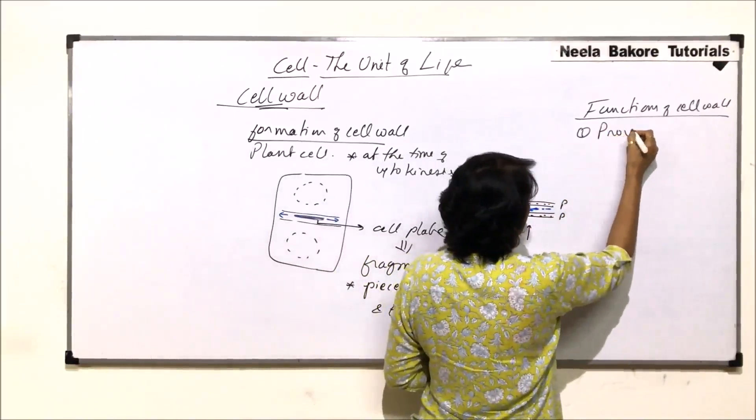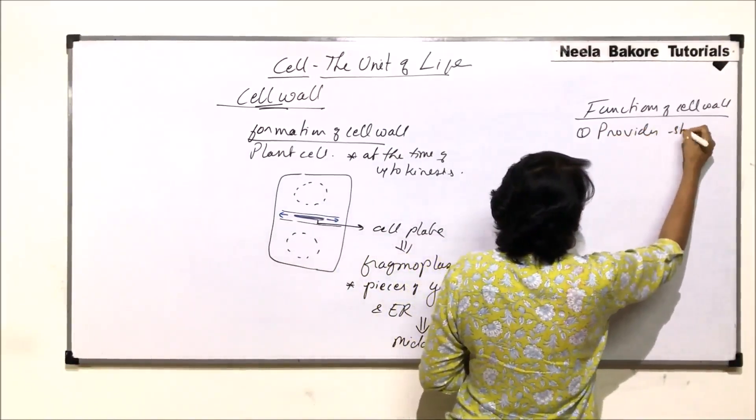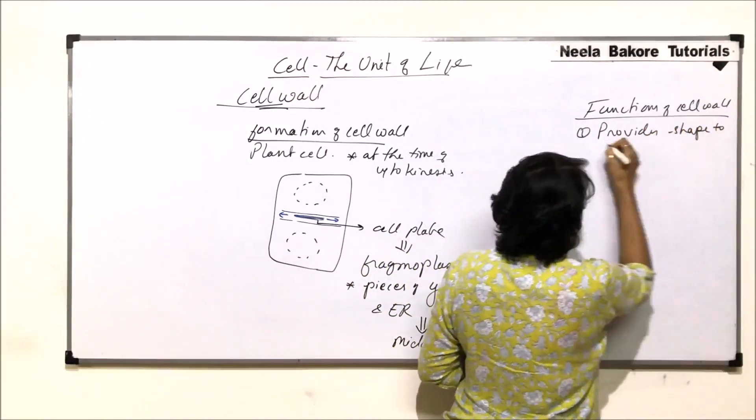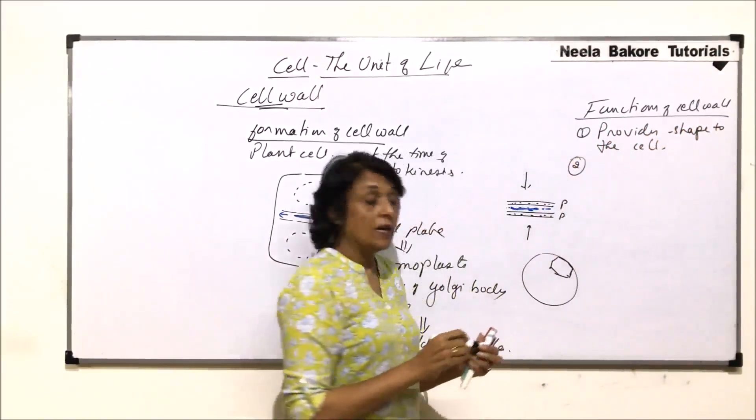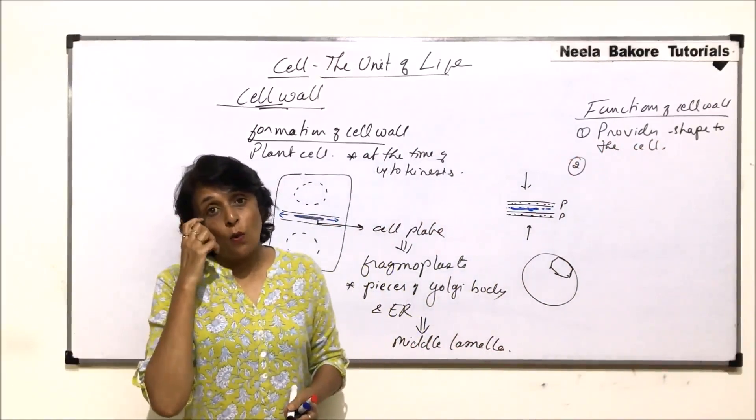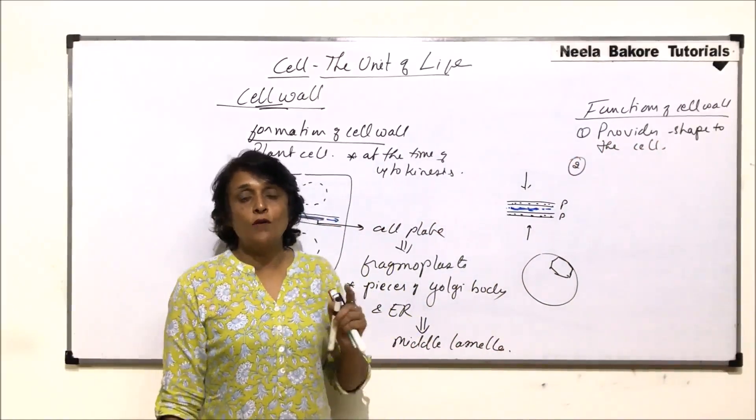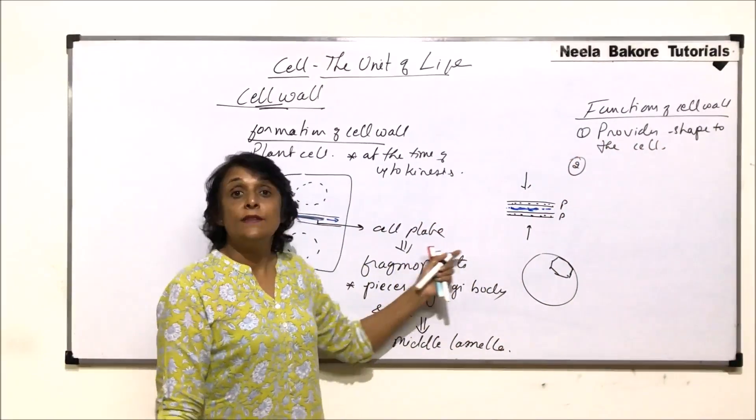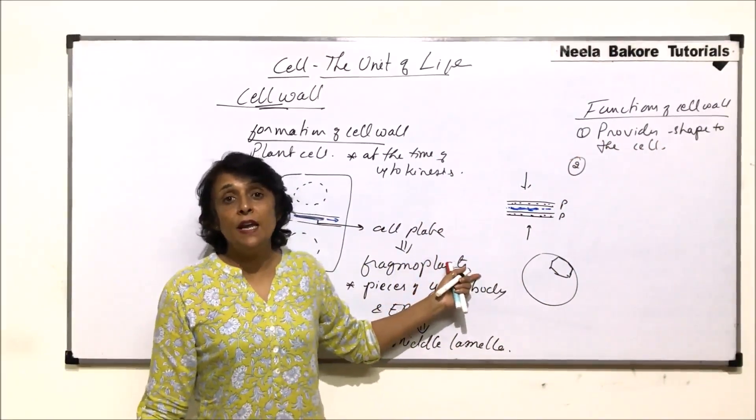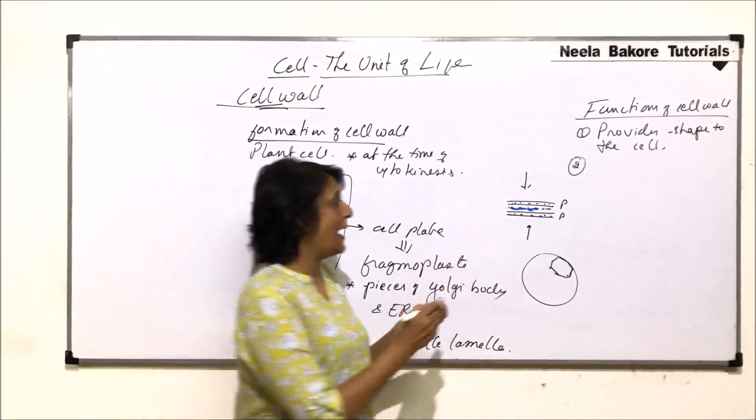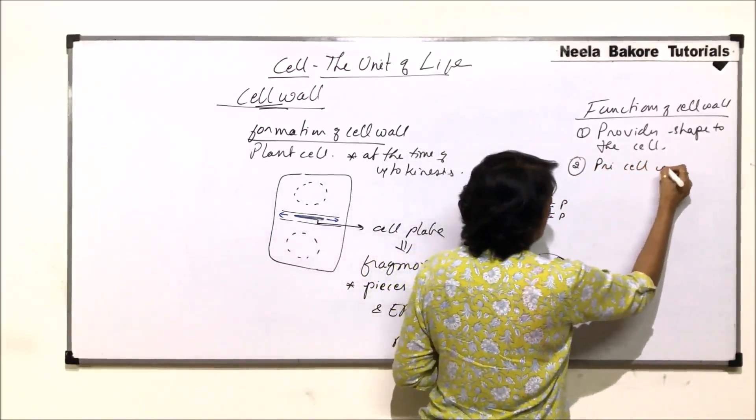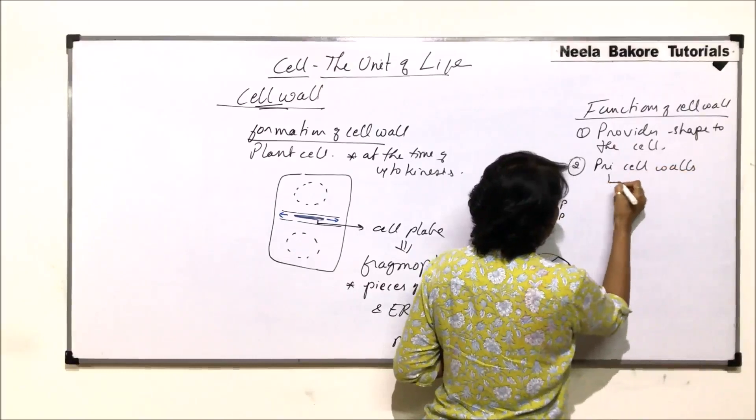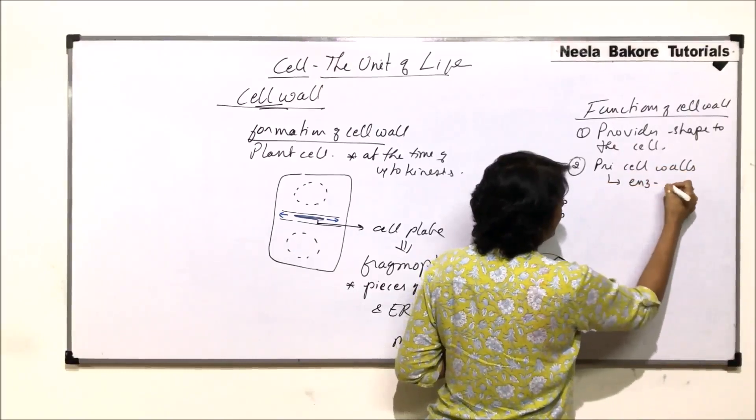The next function: primary layer of cell wall, there are three layers which we have talked of - primary, secondary and tertiary. The primary layer is believed to be helping in enzymatic action. So it is specifically primary cell wall helps in enzymatic action or reactions.